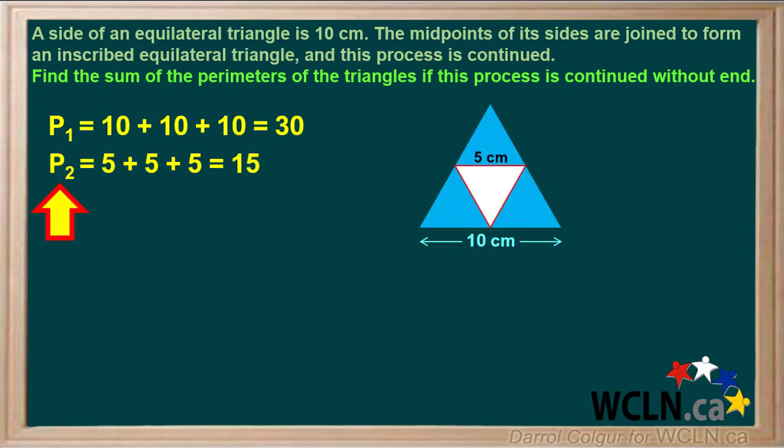You can see by looking at the diagram that each side of the second triangle, the white one, will be half of 10, or 5 centimeters. So the perimeter of this second triangle we'll call P2, which will be 5 plus 5 plus 5, or 15.